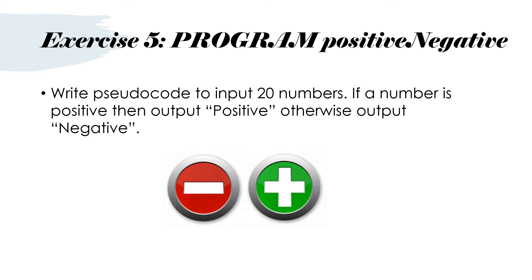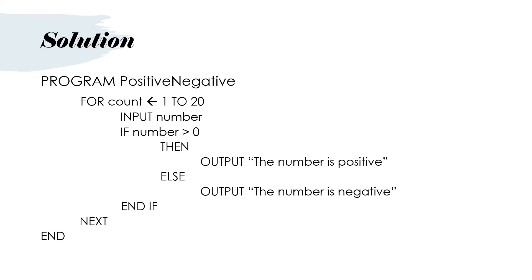Exercise 5, program positive negative. Write pseudocode to input 20 numbers. If a number is positive then output 'positive', otherwise output 'negative'. We already did this IF statement in the previous video, so please try it on your own. The solution: program positive negative. FOR count from 1 to 20, INPUT number, and then we do the IF. These lines of code were all done before — all we had to do is put them inside the FOR loop, and then this part will repeat 20 times.